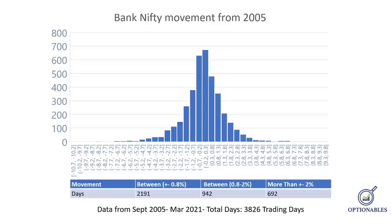Next, between 0.8% to 2%, we have around 942 out of 3,826 trading days — that's 26-27% — where BankNifty shows a slight uptrend or downtrend. More than 2% movement is considered highly trending, which accounts for around 20% of days. So we have range-bound, slightly trending, and highly trending. And that's the exact reason why we're doing a short straddle — markets more than 55% of the time stay range-bound.